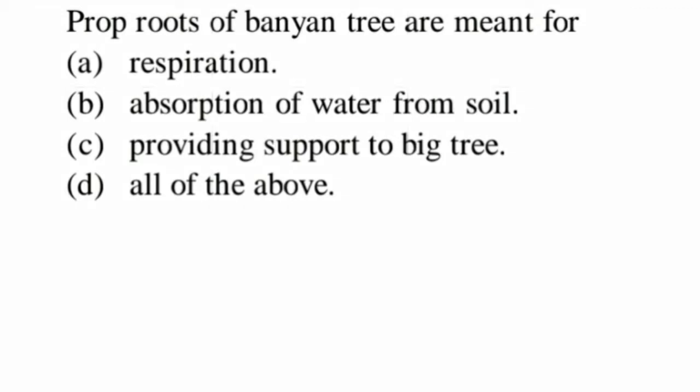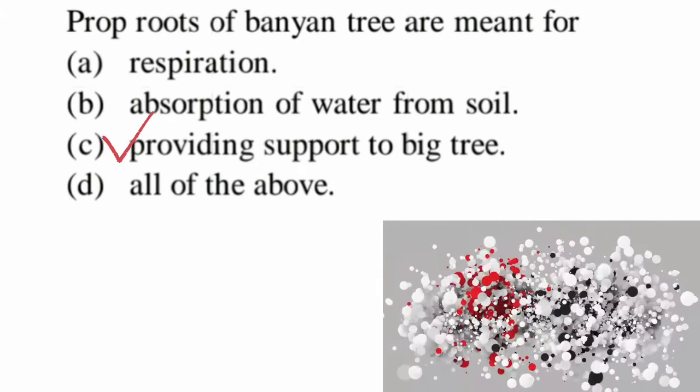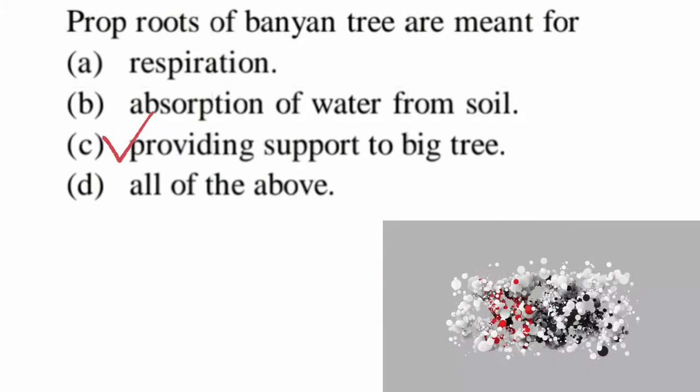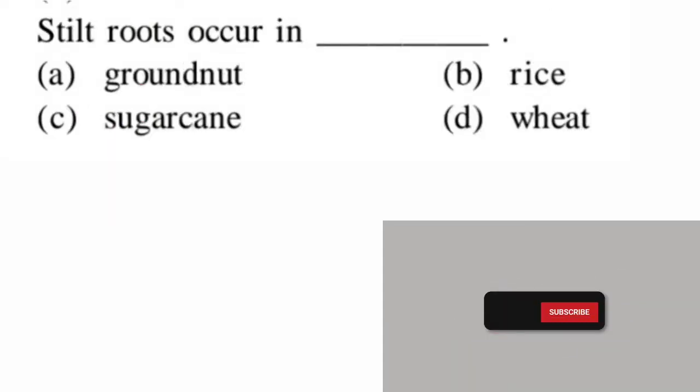Next question: prop roots of banyan tree are meant for — prop roots are a type of adventitious roots providing extra mechanical support to big trees. They are also called pillar roots, normally seen in the banyan tree, and their main function is providing support to the big tree. So option C is correct.